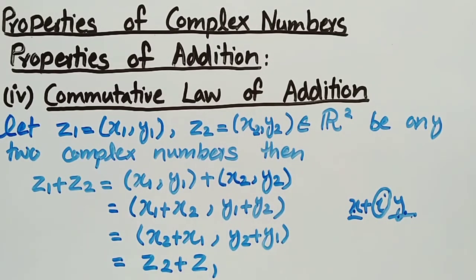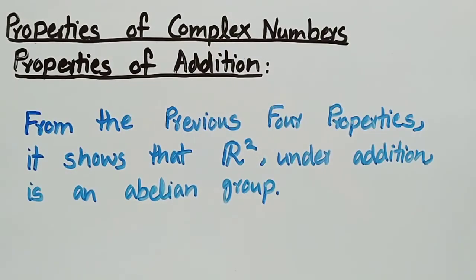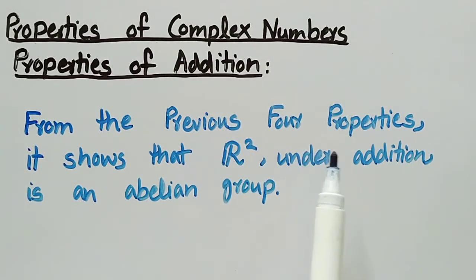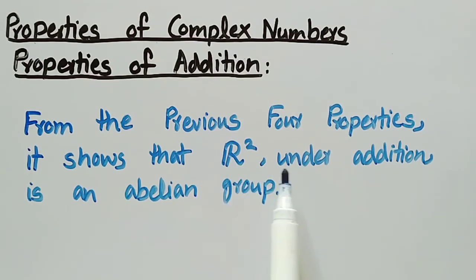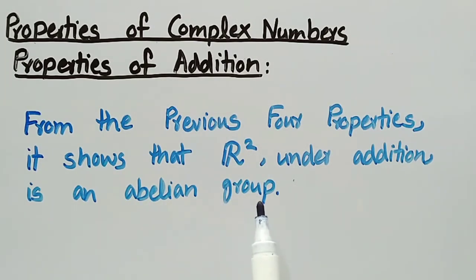So, the commutative law of addition for complex numbers holds. From these properties, it shows that R², the set of all complex numbers under addition, is an abelian group.